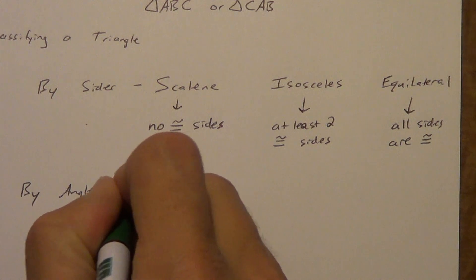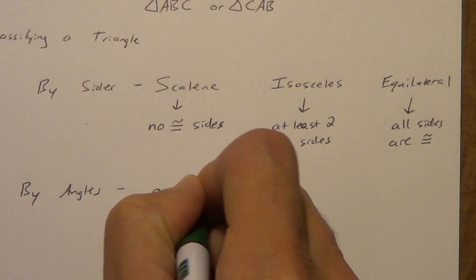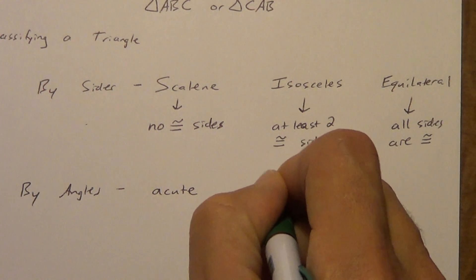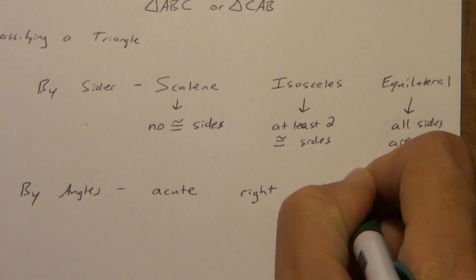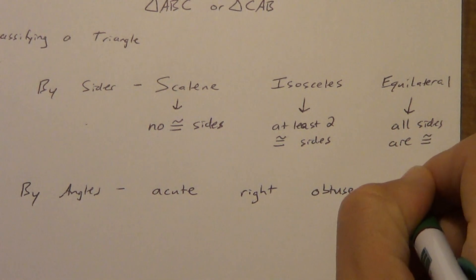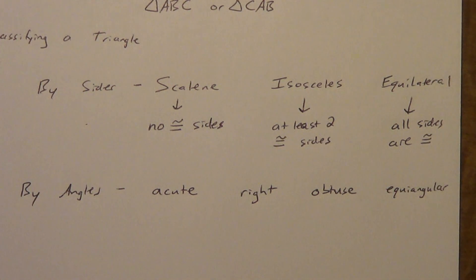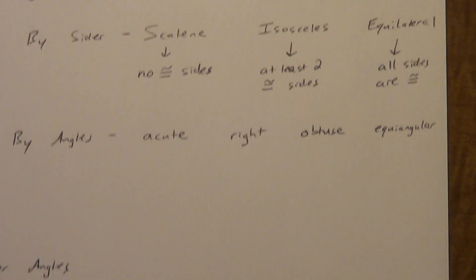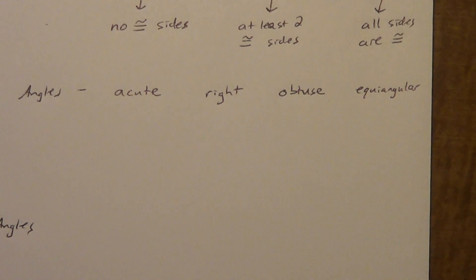Okay. Now by angles, you can have an acute triangle. You can have a right triangle. You can have an obtuse triangle. And you can have an equiangular. Acute, right, obtuse, and equiangular. Let me zoom in on that a little bit so you can make sure you get your spelling right.